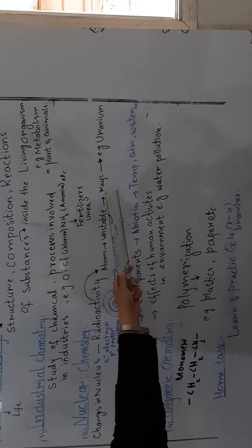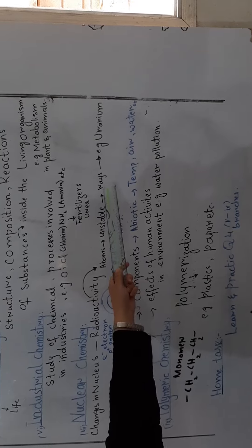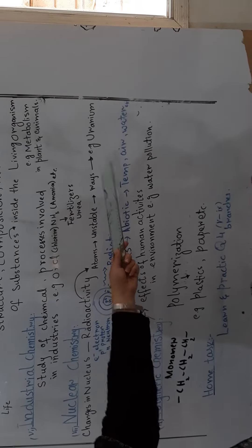emission of different types of rays. Like alpha, beta, gamma rays, etc. For example, uranium is an unstable atom, which is radioactive.